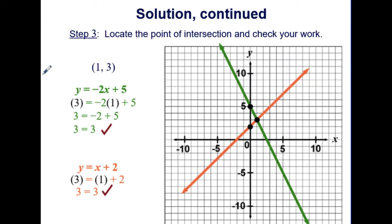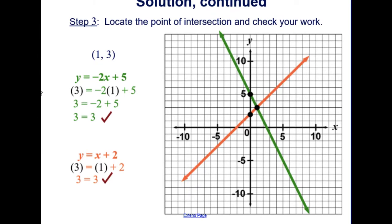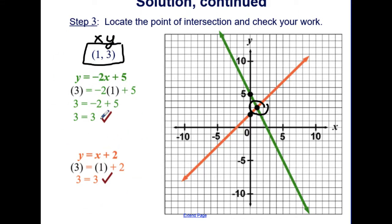Step 3 is to locate the point of intersection and check the work. The point of intersection is (1, 3). Using x equals 1 and y equals 3, we substitute into both equations. It makes the green equation true, since the point is on the green line, and true for the orange equation, since it's on the orange line.